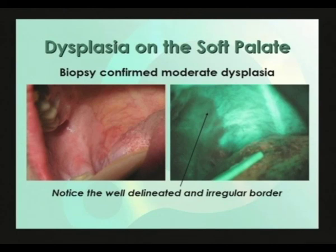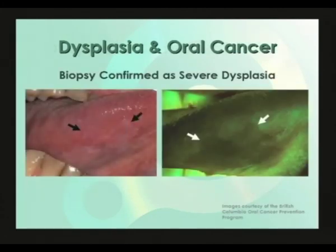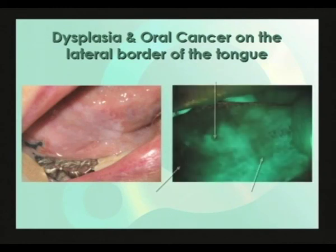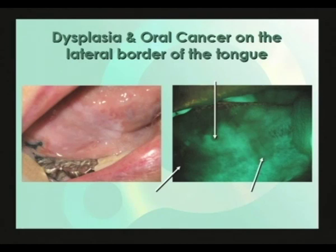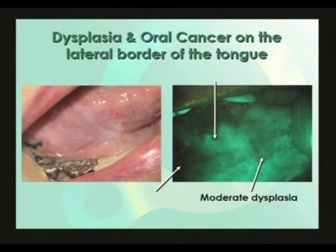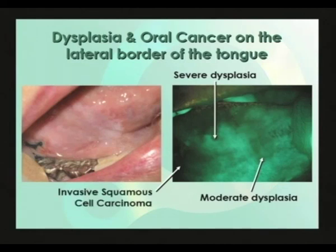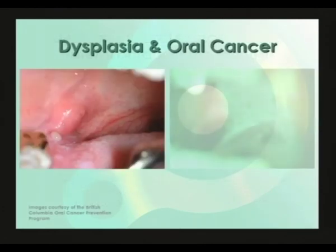This is typical of dysplasia and oral cancer. This area of leukoplakia showed up predominantly dark under VELscope with an irregular and well-delineated border, and was biopsy-confirmed as severe dysplasia. A large area of leukoplakia on the side of the tongue showed some brighter areas due to keratin fluorescence, but the areas indicated by arrows are darker under VELscope. Notice the theme of irregular and well-delineated borders, with increasing darkness associated with more advanced stages. The slightly less dark area was moderate dysplasia, the smaller darker area was severe dysplasia, and the very dark posterior area was invasive squamous cell carcinoma.